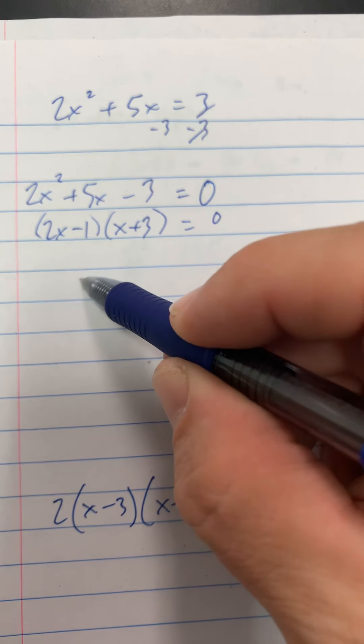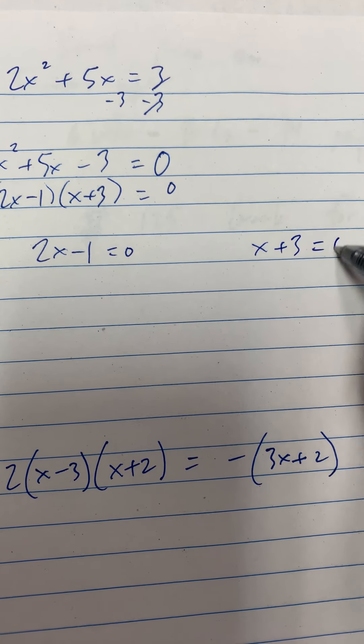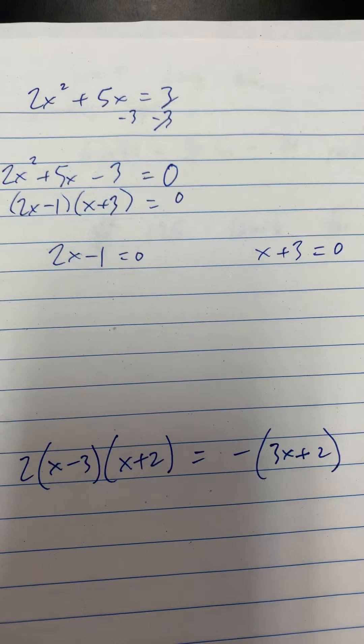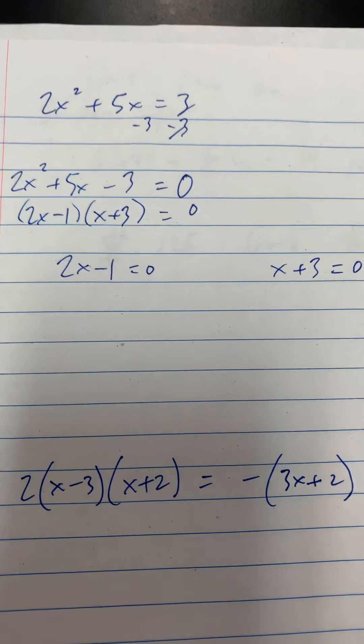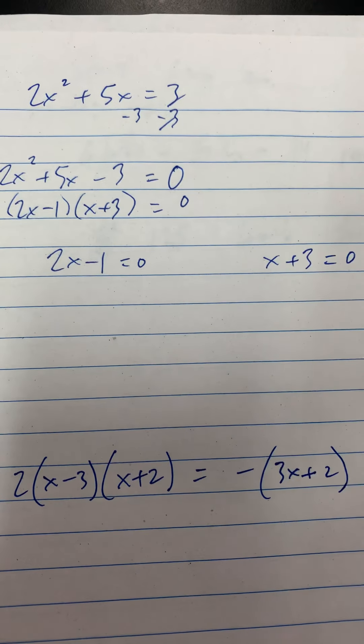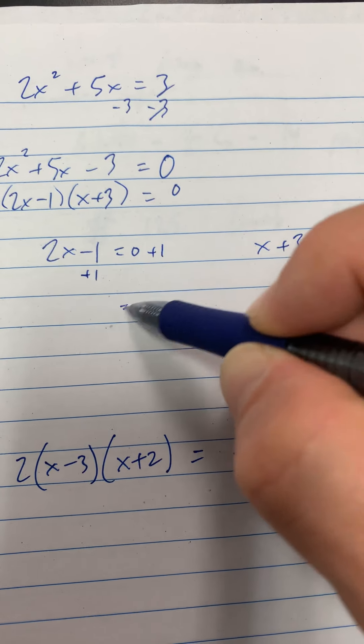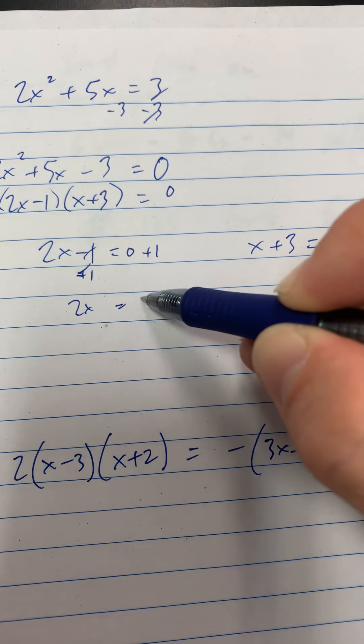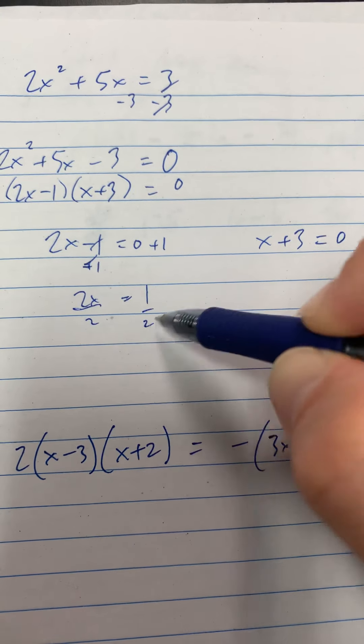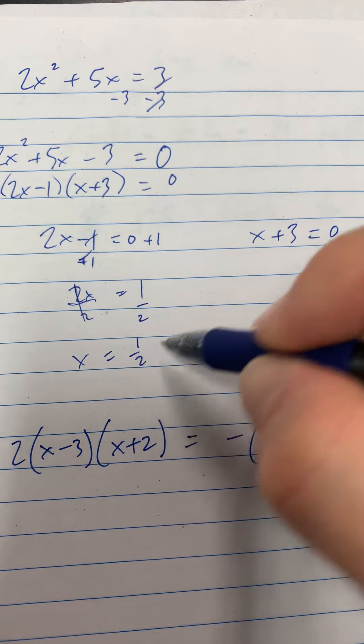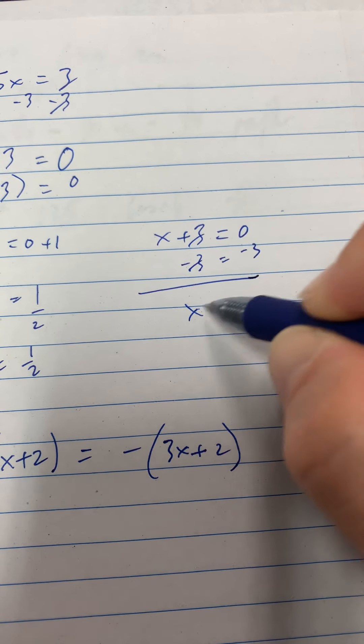So 2x minus 1 equals 0 and x plus 3 equals 0. And now, these problems, most of them, if not all of them, are going to end up with two values of x. So we're going to add one here, add one here. We get 2x equals 1. And we're going to divide both sides by 2. So x, one of our values is going to be x equals 1 half. And the other is going to be x equals negative 3.